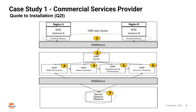We're going to use two case studies to make the point of why connecting information to the business processes is so powerful. Let's start with case study number one: a commercial security and safety solutions and services provider. The key process for this organization, what they call quote-to-installation, in a very simplistic overview, starts with the sales organization.